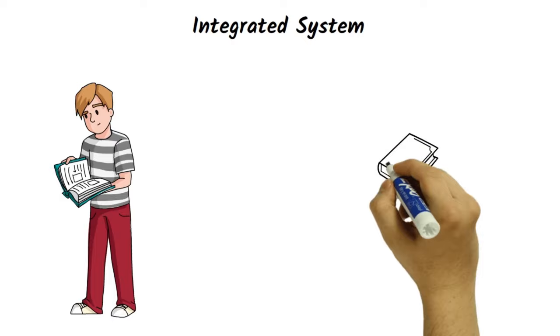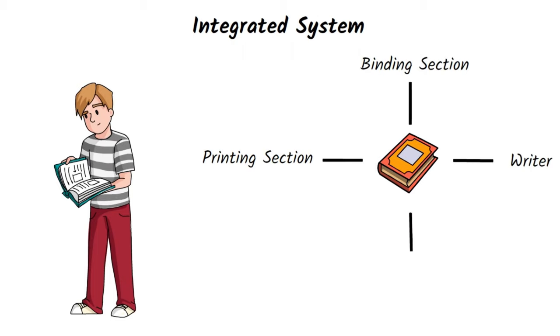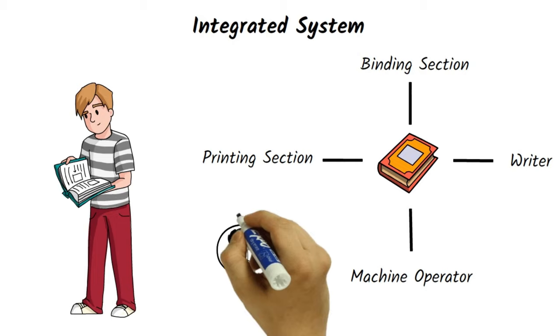Here, we will discuss what is the integrated system. You can understand this term by an example. Let us assume you have bought a book, so there are many individuals sectioned in the press house as the printing section, binding section, writer, machine operator, and many more. They work hard and work together to provide you your book. So, total involvement of any organization to perform any task can be understood as an integrated system.